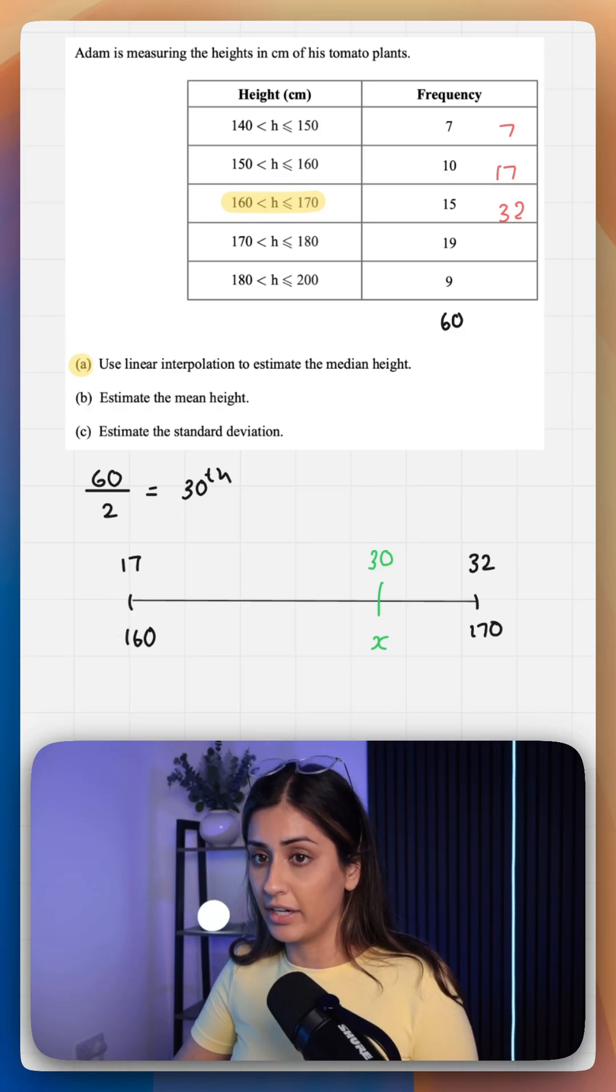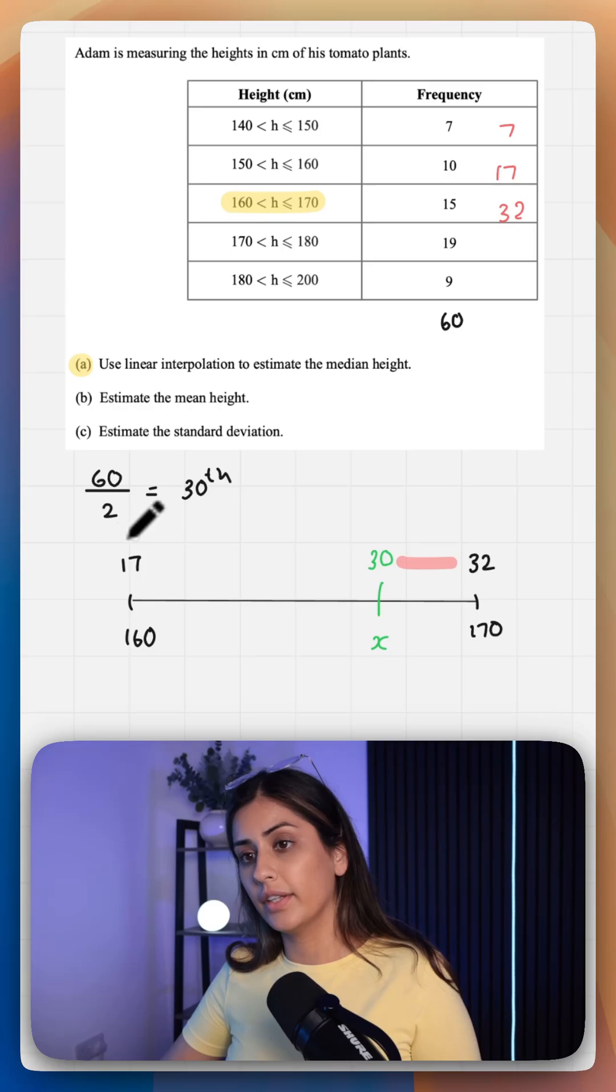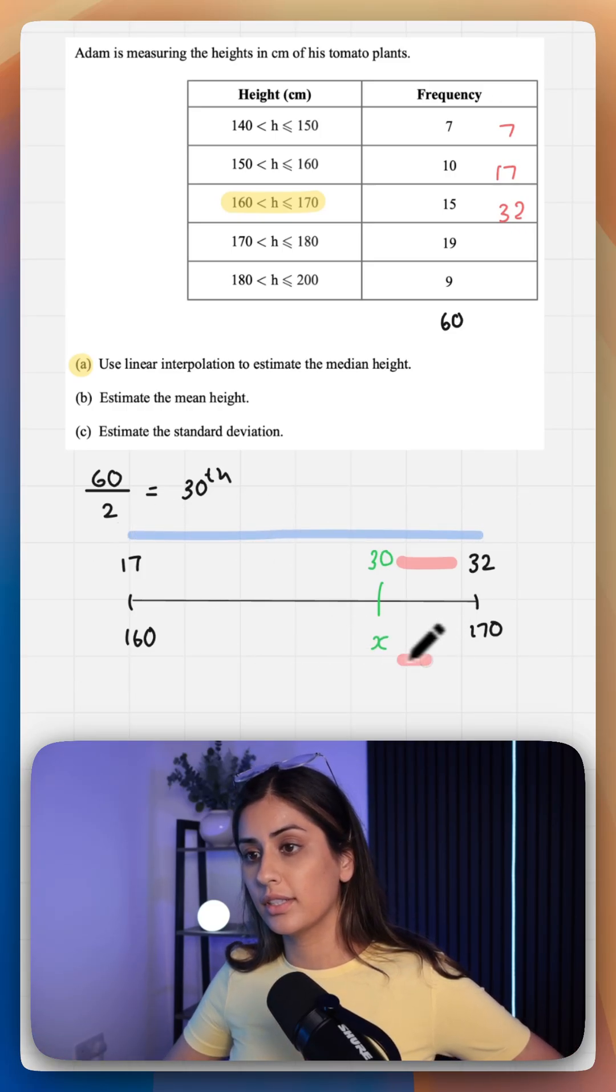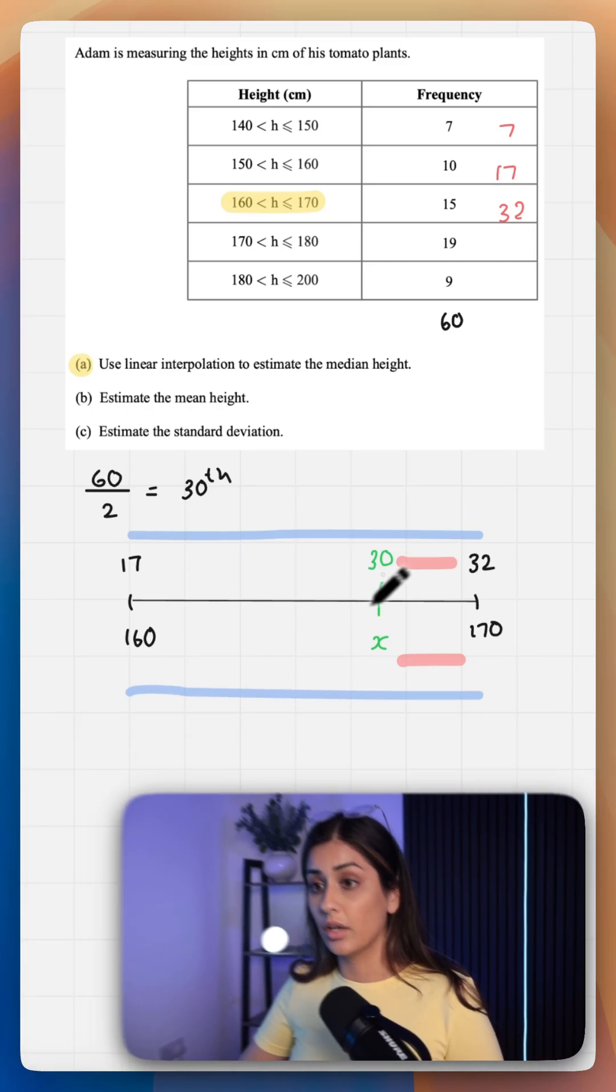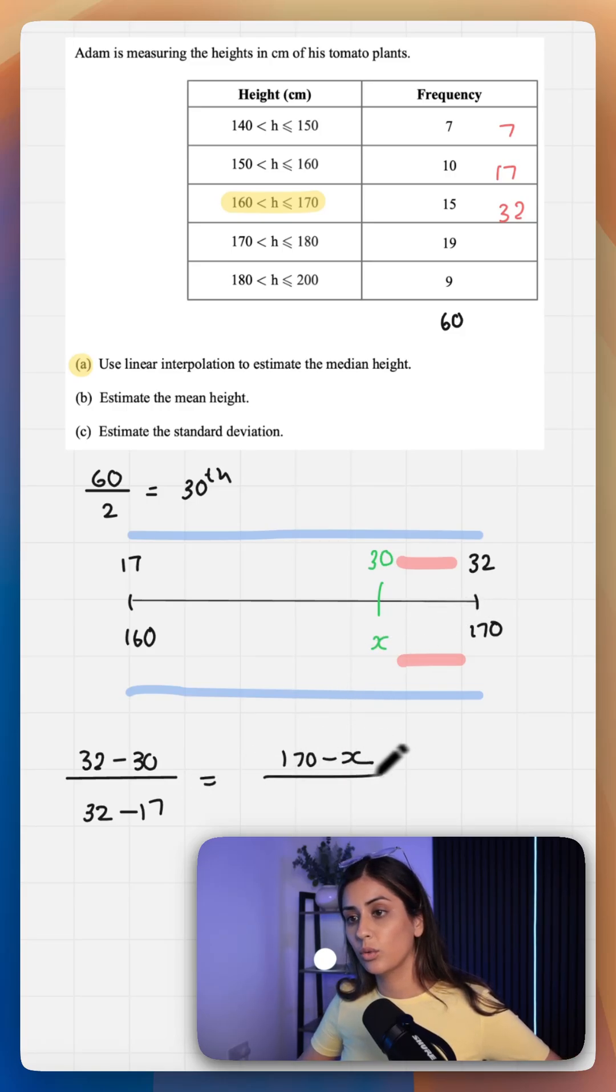You can do this by visualizing this as ratios. We can say that the distance between these two over the total distance of this entire region is equal to the distance between these two points over your total distance. So in short, 32 minus 30, which is this distance here, over our entire distance here, which is 32 minus 17, is equal to this distance here of 170 minus x all over 170 minus 160.